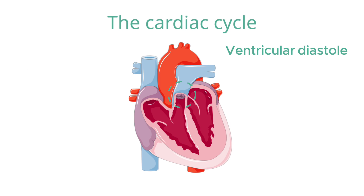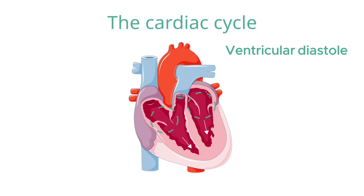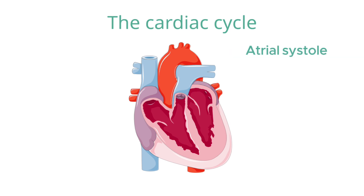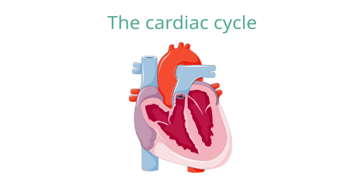Shortly afterwards, the atrioventricular valves open to allow blood to fill passively from the veins into the atria and ventricles. Towards the end of ventricular diastole, a new electrical impulse reaches the atria, which then contract to force blood into the ventricles through the open atrioventricular valves, and then the cycle restarts.